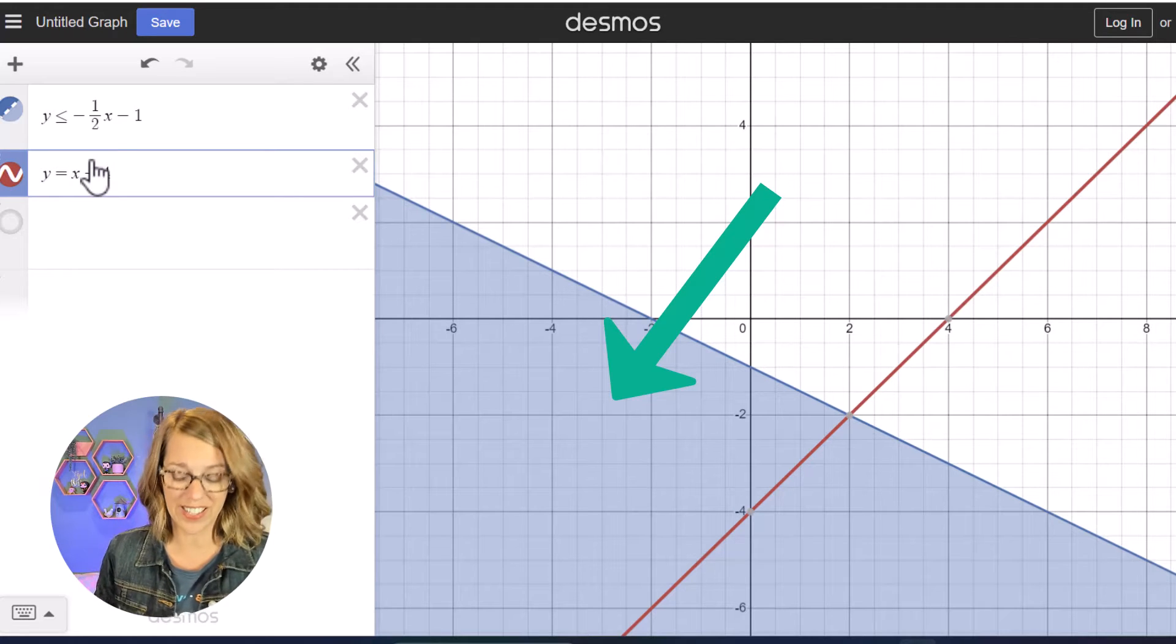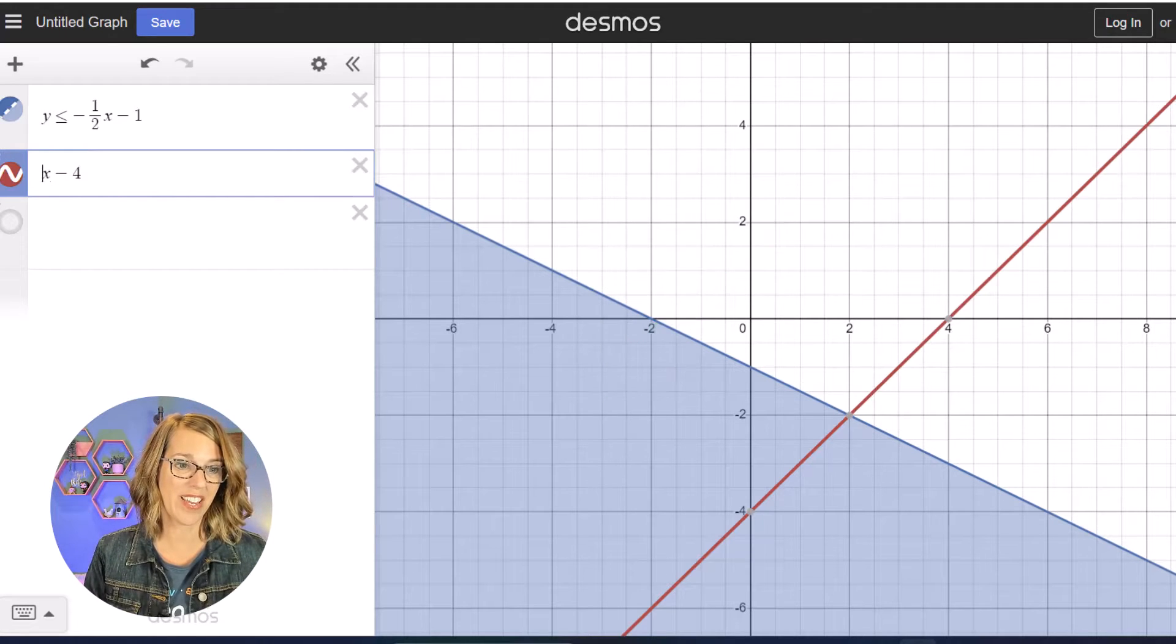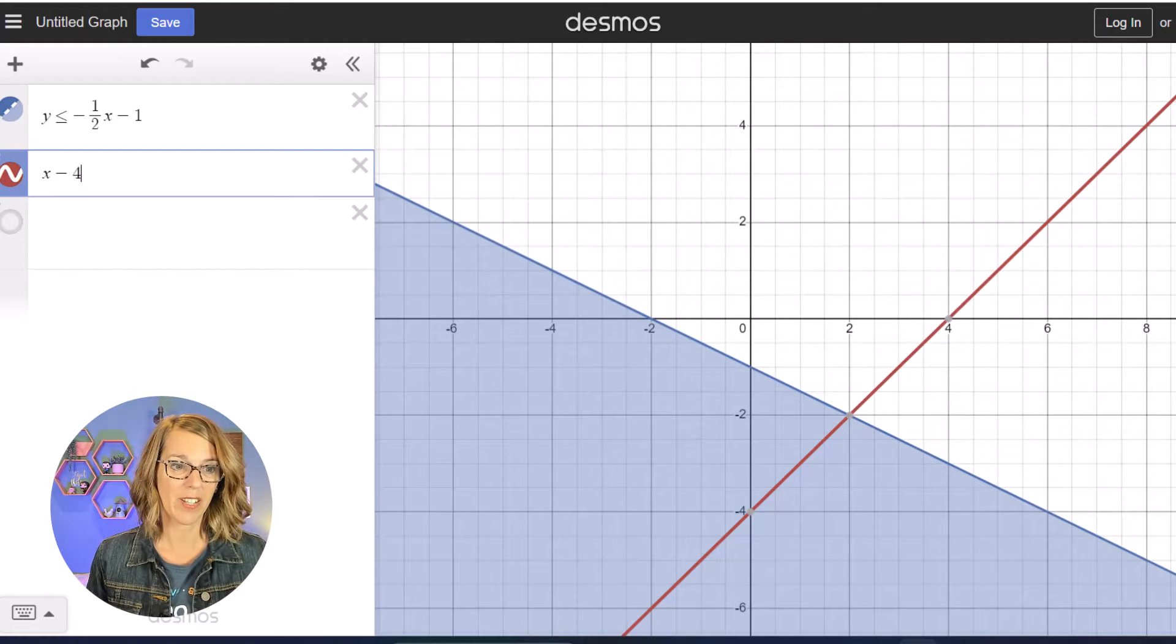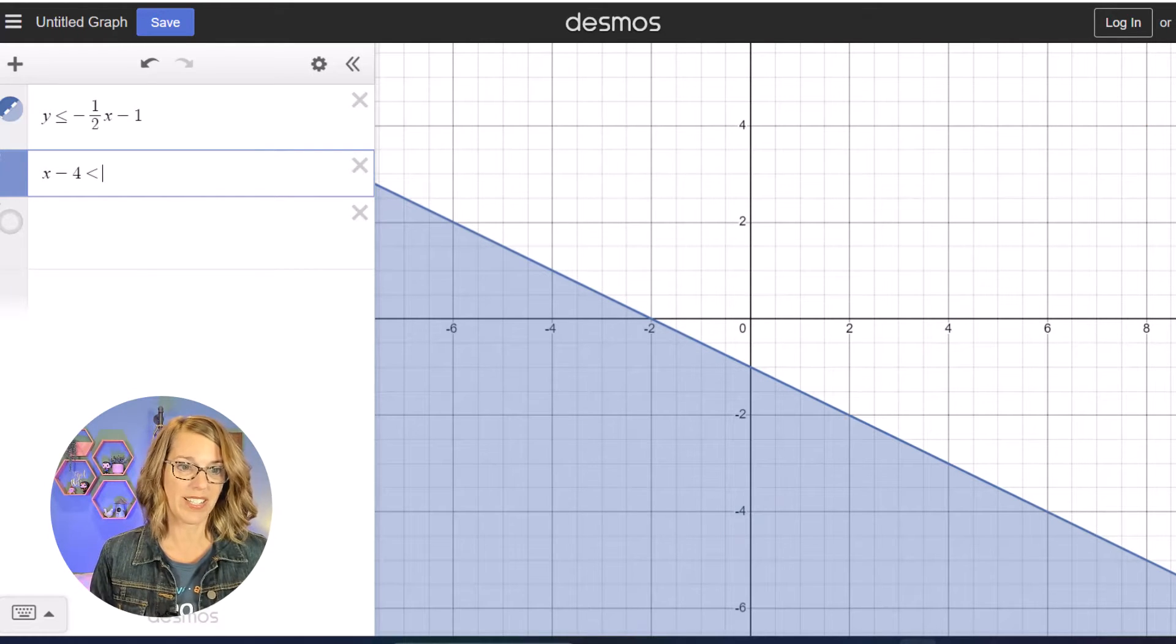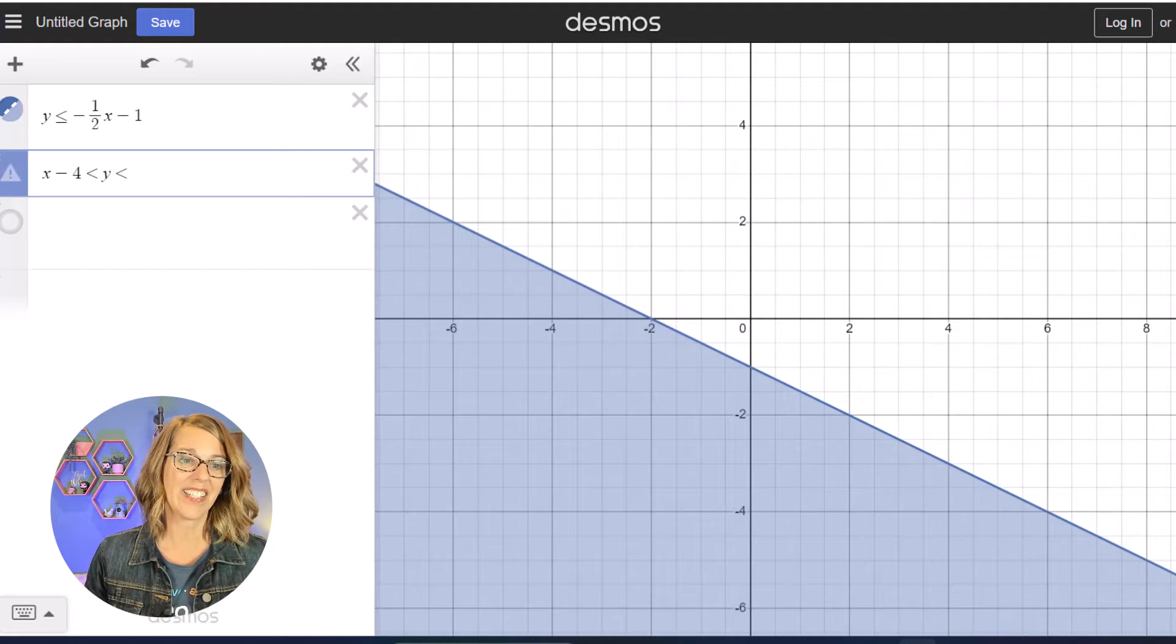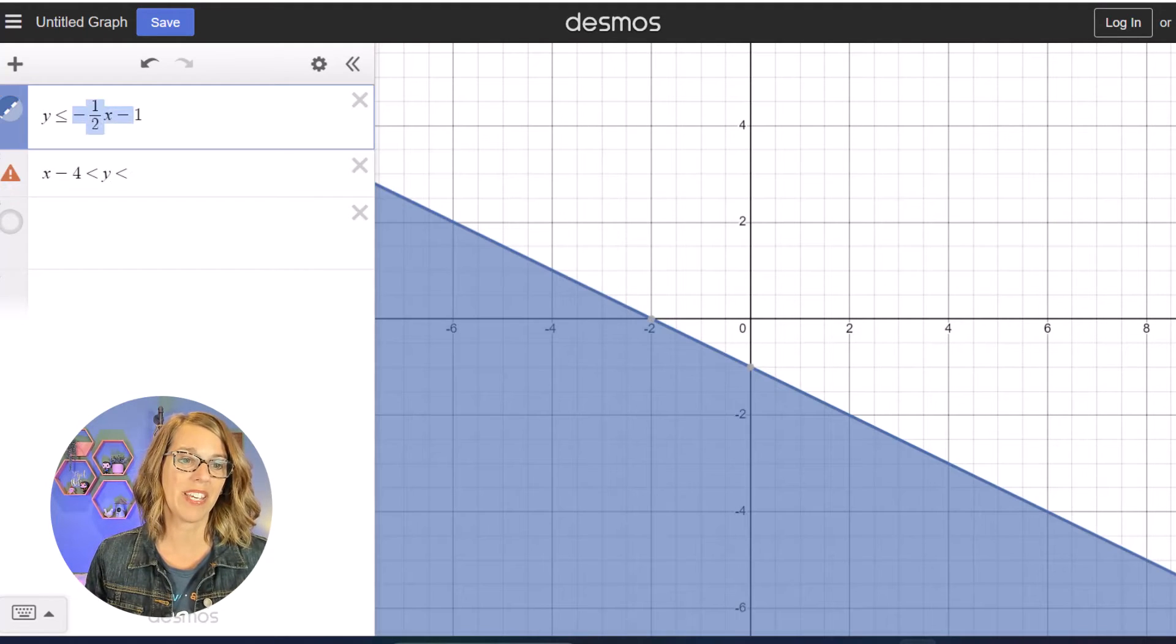So if I wanted to shade in between the two lines, let's say on the left hand side, that would mean that I would want this red line first. So I'm going to go ahead and just leave it as X minus 4. I want that to be the lowest and then I want this to be less than my Y values.